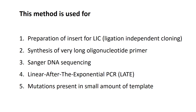In summary, in asymmetric PCR you use a limiting primer and an excess primer to produce single-stranded DNA products. The key consideration is which strand you want in more copies — based on that, you decide which primer should be in excess and which should be limiting. Thank you for watching.